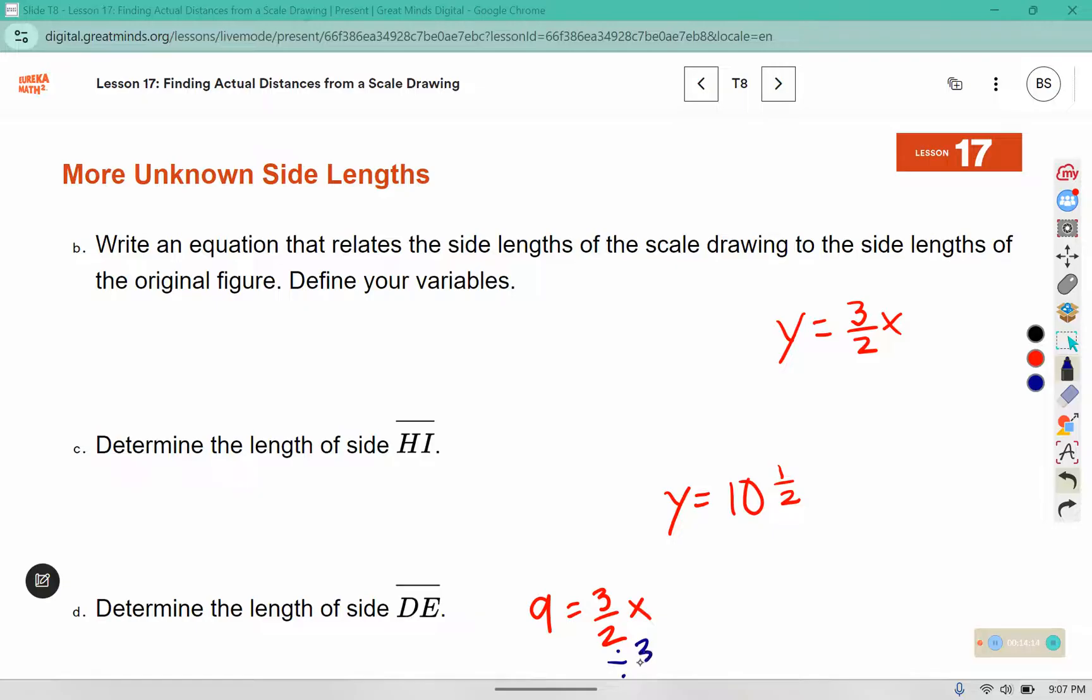So I'm going to want to divide by 3 over 2 on both sides. These will divide out and I'll be left with x. I have 9 divided by 3 over 2 will equal x. I'm going to change this to a multiplication problem by flipping the fraction over. I'm going to use the dot for multiplication so I don't confuse my variable x with the multiplication symbol. 9 times 2 is 18 over 3. 3 fits into 18 six times, so x will say 6. It has a side length of 6.